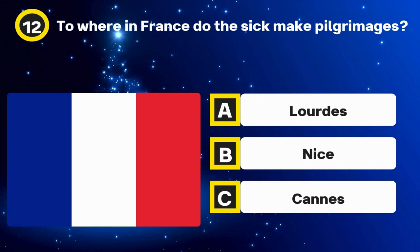Question 36. Asclepius's emblem is a staff with a snake — was he the Greek and Roman god of what? Options: Healing, Medicine, Music. The answer: Medicine.